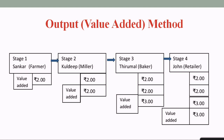So if you add 2 + 2 + 3 + 3, you get 10 rupees as the final value. When the bread is sold and eaten by the consumer, 10 rupees is the final value. This is called the value-added method — whatever value is added at different stages of the production process is added together, and that is used for estimating GDP.